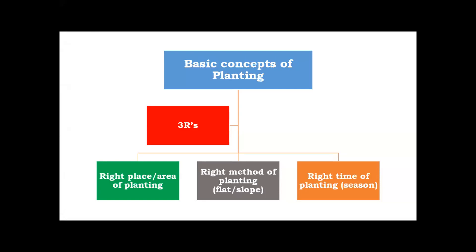Before getting into the actual topic, we must understand the basic concept of planting. I have designed the three R's formula: the right place of the area of planting, the right method of planting, and the right time of planting. These are three critical factors which influence the vigor and healthy establishment of coffee plantations.